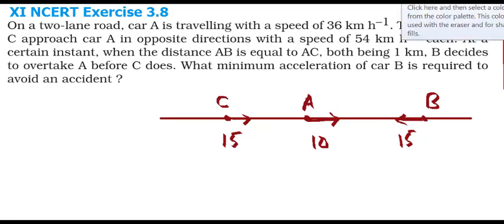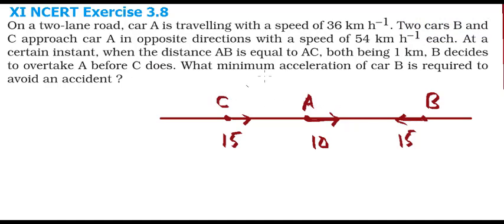At a certain instant, the distance AB is equal to AC, each being 1 km, written as 1000 m. B decides to overtake A before C does. Looking at the diagram, you can see A and B are coming in opposite directions, but C and A are going in the same direction.